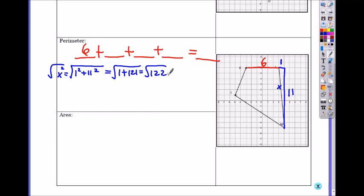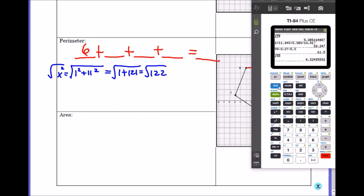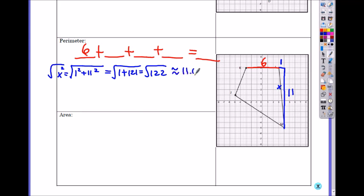So what is square root of one twenty-two? Yeah, please take out your calculator and try it, don't just copy this down. So we get 11.045, rounded to 11.045, so it's adding 11.045.